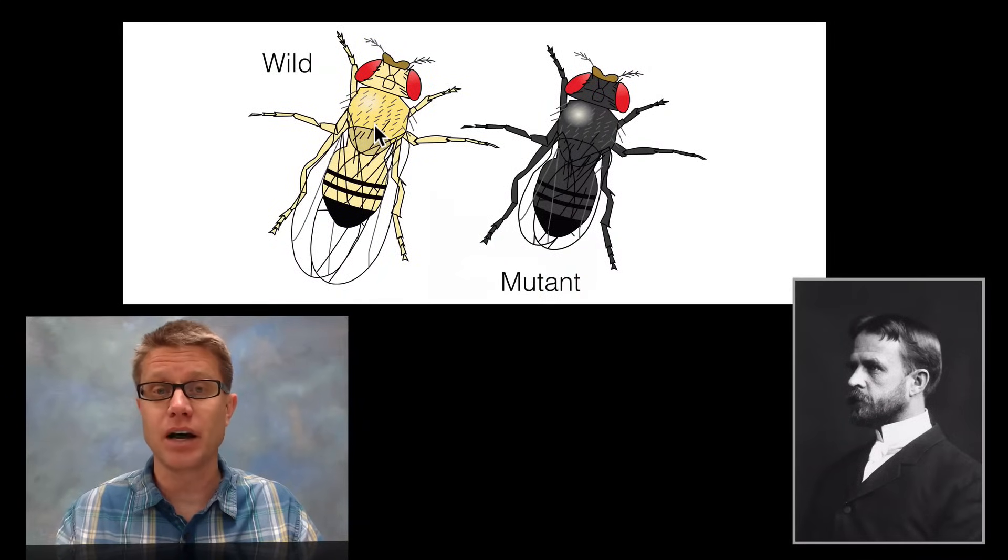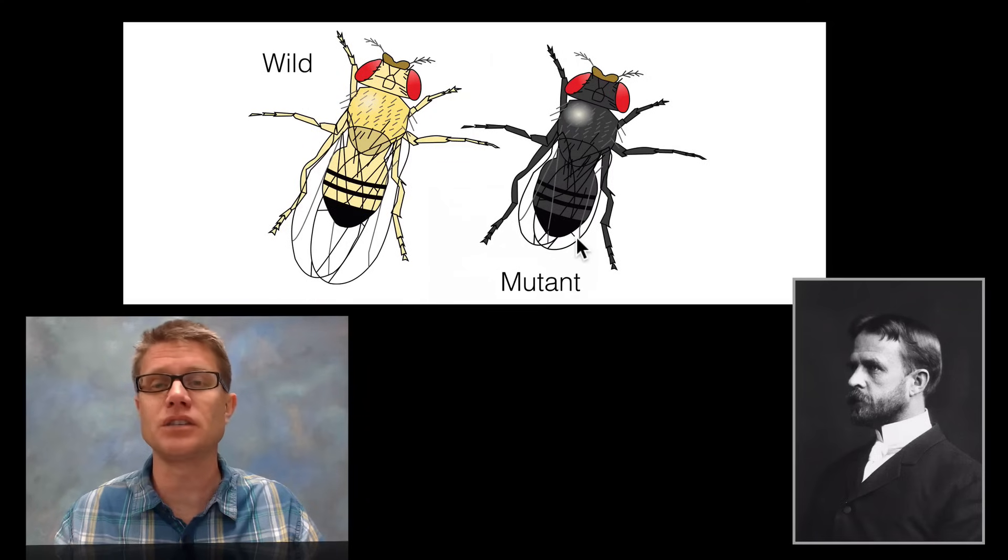On the left we have a wild fruit fly, that's what they normally look like. On the right is a mutant. There are two mutations in the one on the right, not only coloration but you can see that it also has these really small, what are called vestigial wings.